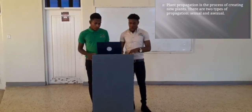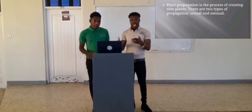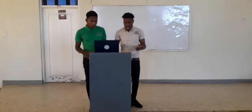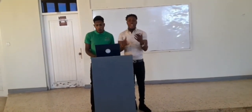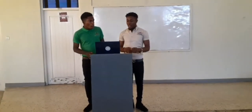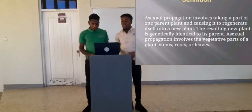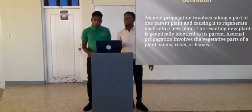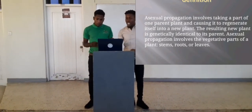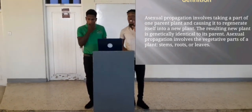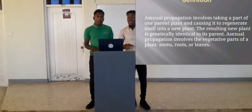The two types are sexual and asexual. With propagation, new plants are grown from a variety of sources, like from seeds and cuttings and from other plants. The definition of asexual propagation is that it involves taking a part of one parent plant and causing it to regenerate itself into a new plant. The resulting new plant is genetically identical. Asexual propagation involves the vegetative parts of a plant, such as the stem, roots, and leaves.